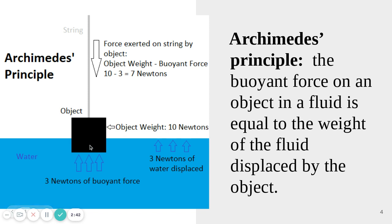This buoyant force pushes upward. If the amount of water displaced is equal to the weight of the object, the object will float. But if the object weighs 10 newtons and only 3 newtons of water have been displaced, the buoyant force isn't strong enough to hold up the object, and it sinks farther into the water. As it sinks farther, more water gets pushed aside, so the buoyant force gets bigger. If the buoyant force becomes as great as or greater than the weight of the object, it will float; if not, the object will continue to sink.